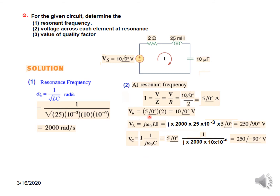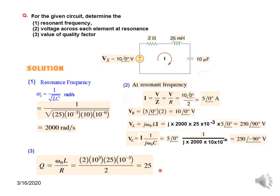V_R = I·R, giving the resistor voltage. V_L = jω₀L·I — plugging in the values gives 250∠90°. V_C = (1/jω₀C)·I — plugging in the values gives 250∠−90°. For the quality factor, using the L formula: Q = ω₀L/R, and plugging in the values we get Q = 25.